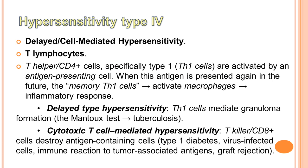The second subtype is cytotoxic T cell-mediated hypersensitivity. The T killer cells, or CD8 cells, destroy antigen-containing cells. For example, in type 1 diabetes, virus-infected cells, immune reaction to tumor-associated antigens, or graft rejection. Nhóm nhỏ thứ hai là phản ứng quá mẫn gây độc tế bào qua trung gian tế bào T. Tế bào T độc (CD8) phá hủy các tế bào chứa kháng nguyên. Ví dụ như đái tháo đường type 1, tế bào bị nhiễm virus, phản ứng với kháng nguyên liên quan khối u, hoặc thải ghép.